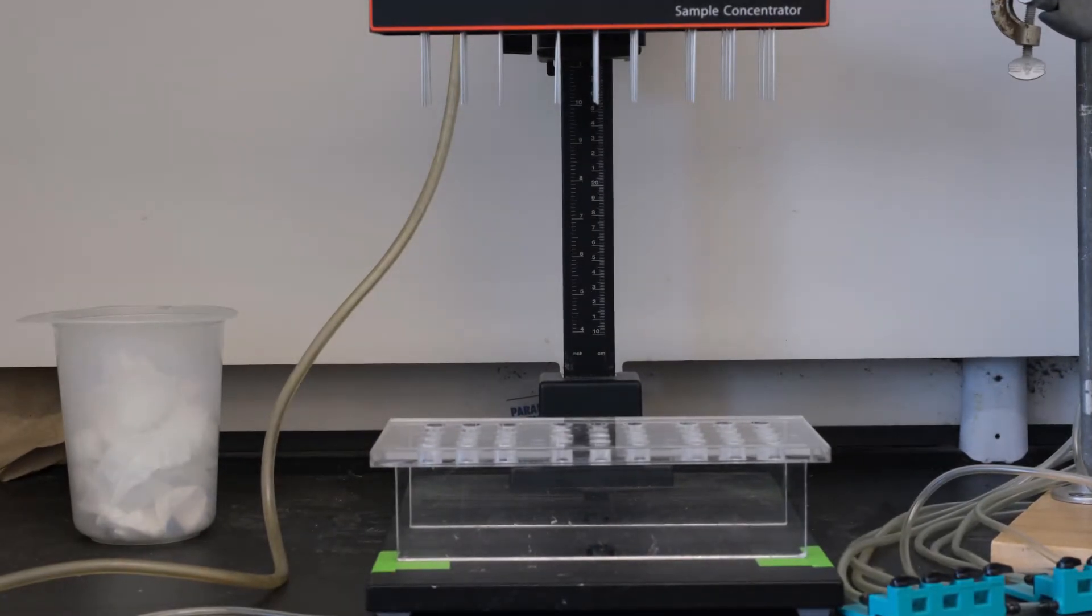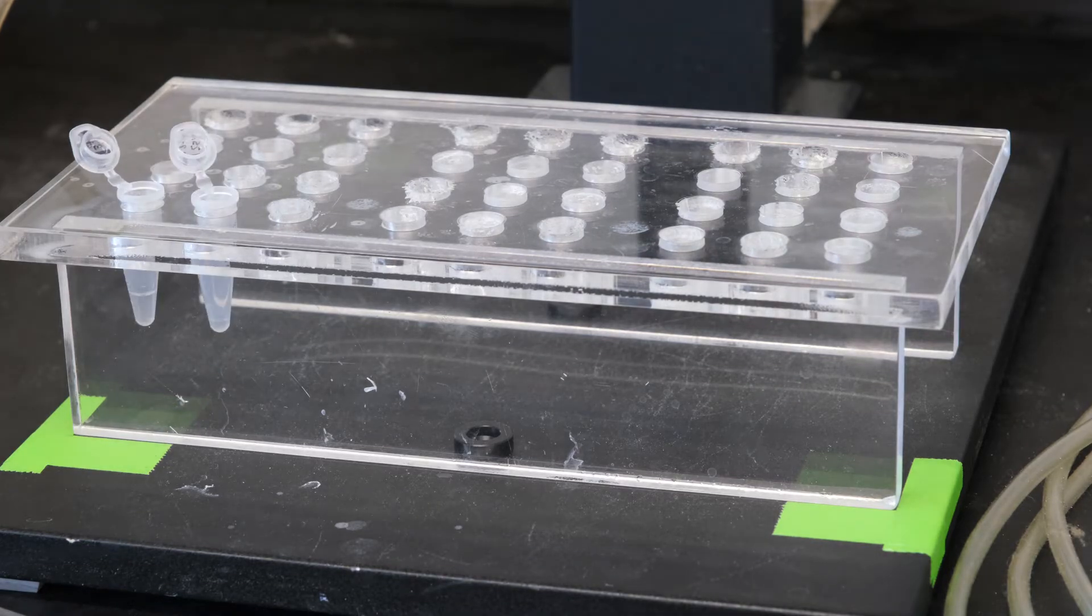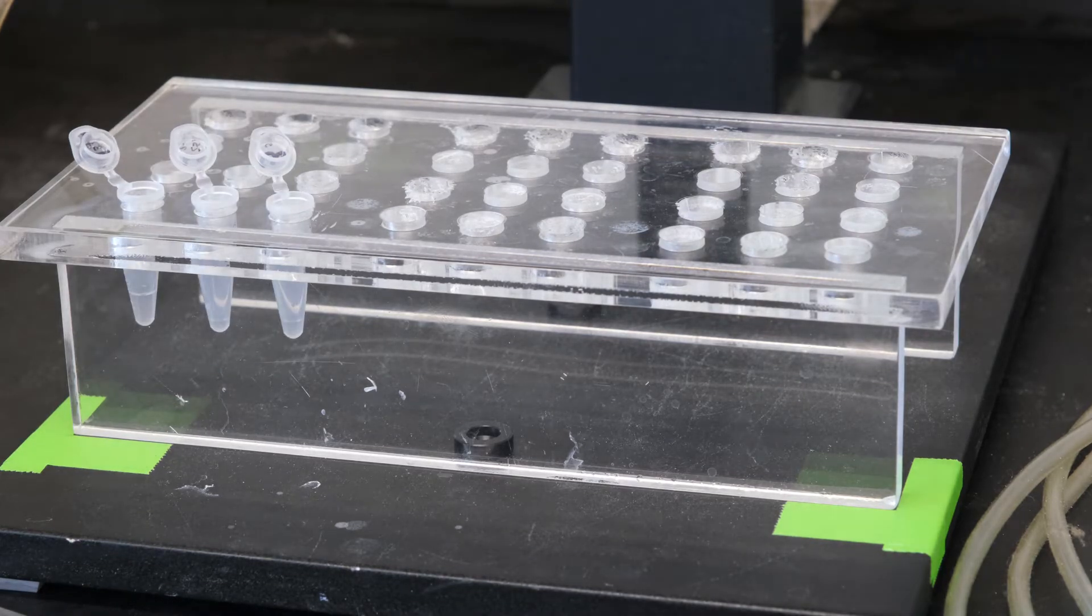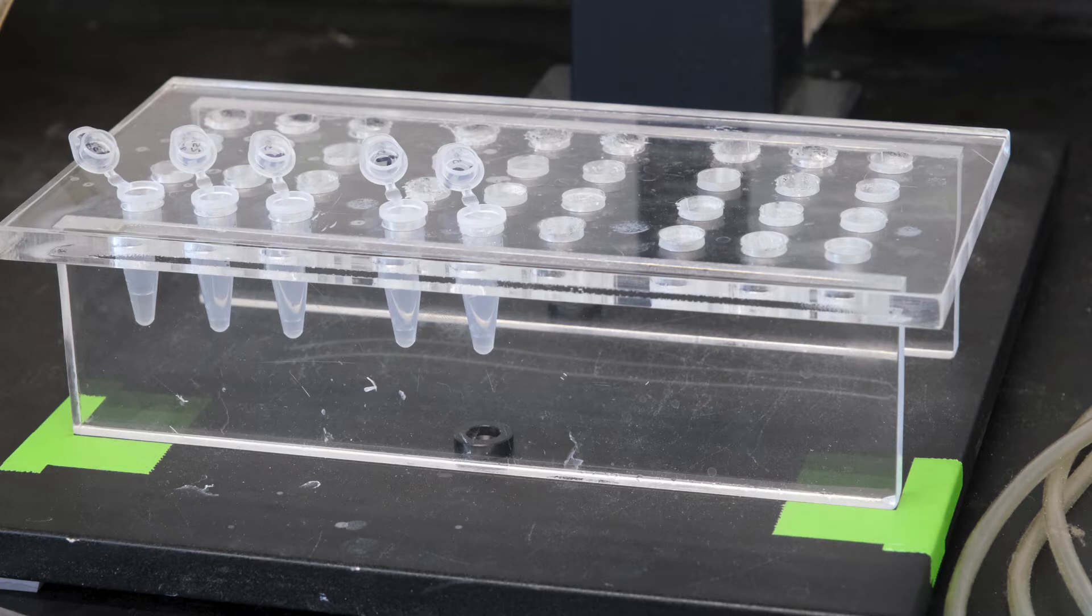The sample concentrator itself consists of a grid of needles and a tube rack. The green tape serves as a guide for positioning the rack so that the needles will sit nicely in your tubes when lowered. Load your tubes into the rack. Make sure to position the lids such that they do not overlap other tube slots, otherwise they will interfere with the lowering of the needles. You may slide the tube rack out for loading if that's easier.